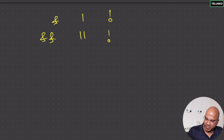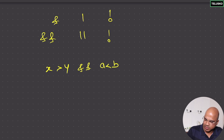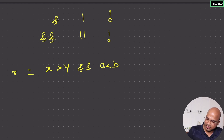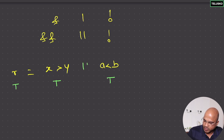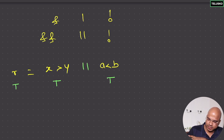Let's talk about short-circuit operators. Say you have 'x greater than y && a less than b' — you want both to be true for the output to be true. You can store this in a boolean variable r. If you use double pipe (OR) instead, then if any of them is true it will give you true. So why do we call it short-circuit?